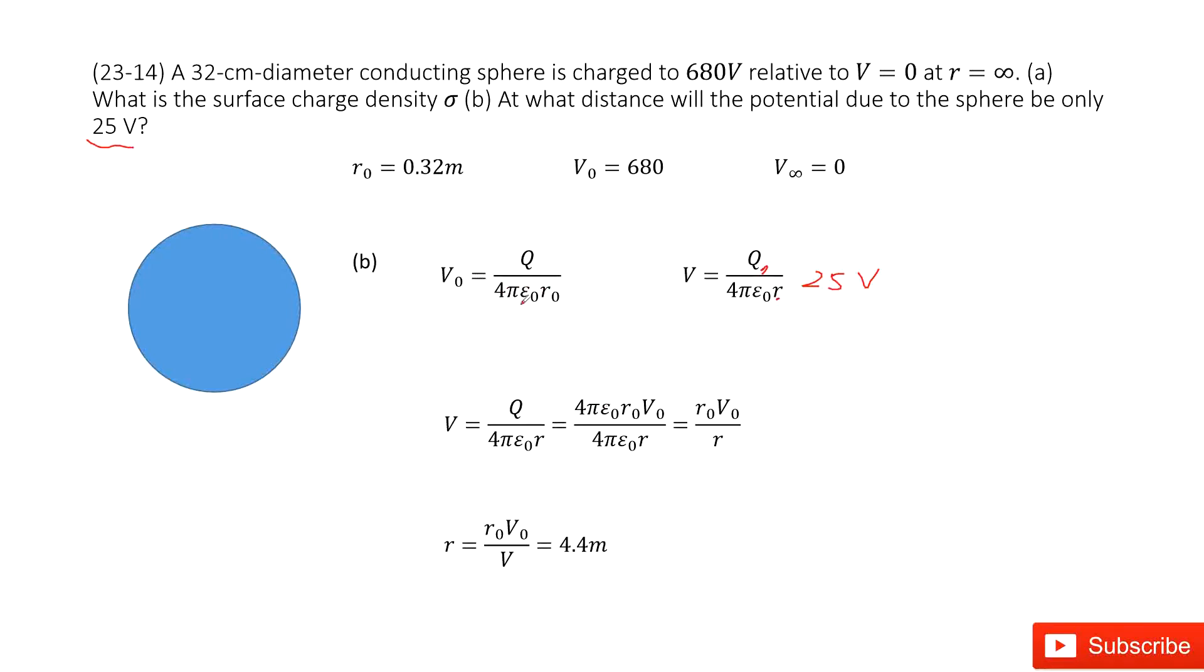So you input Q as 4πε₀r₀V₀. And then in this equation, 4πε₀ cancelled. So you get the term for V.